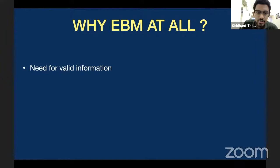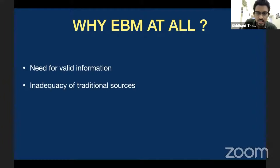First, we need to know that whatever information we have, it needs to be proven as valid. There is a need for valid information, primarily because current traditional sources such as websites or textbooks are grossly inadequate. By the time most textbooks have their editions updated, it's probably about three to four years old, so we need up-to-date evidence to meet the gap of inadequacy of these traditional sources.